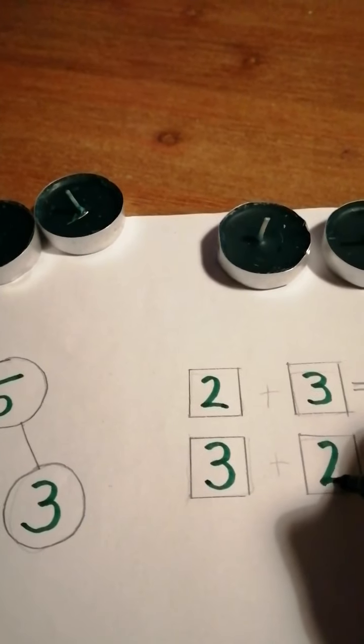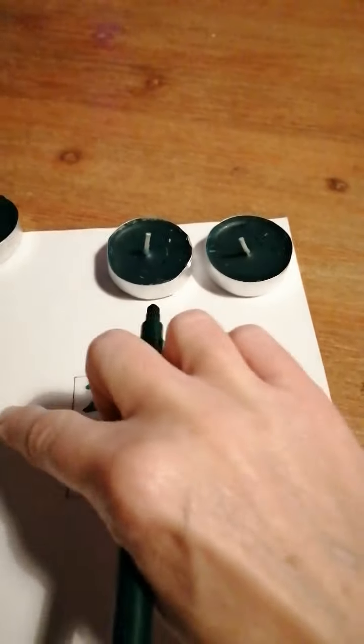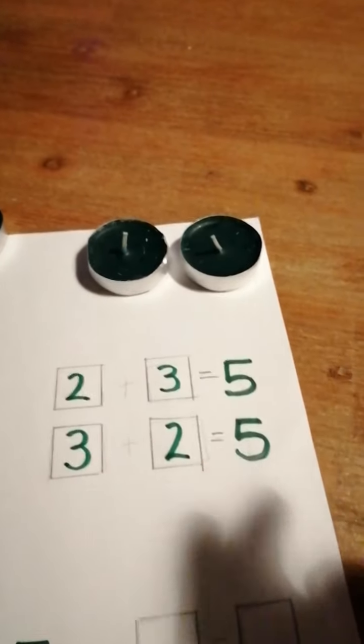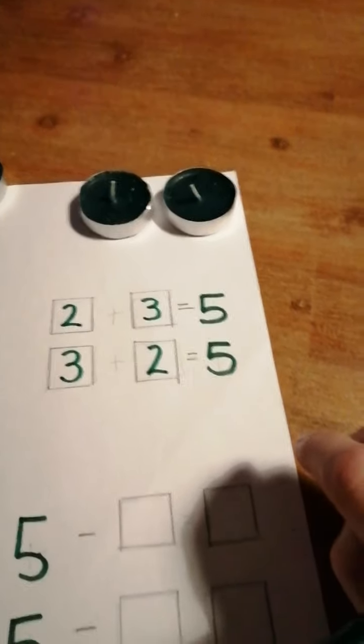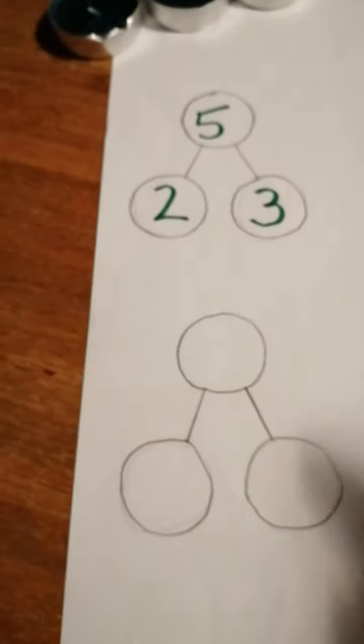So if I was to have 3, we know we have to add 2 more to it to make 5. So my information in these sums is all the same, but we move them around to make them look different.